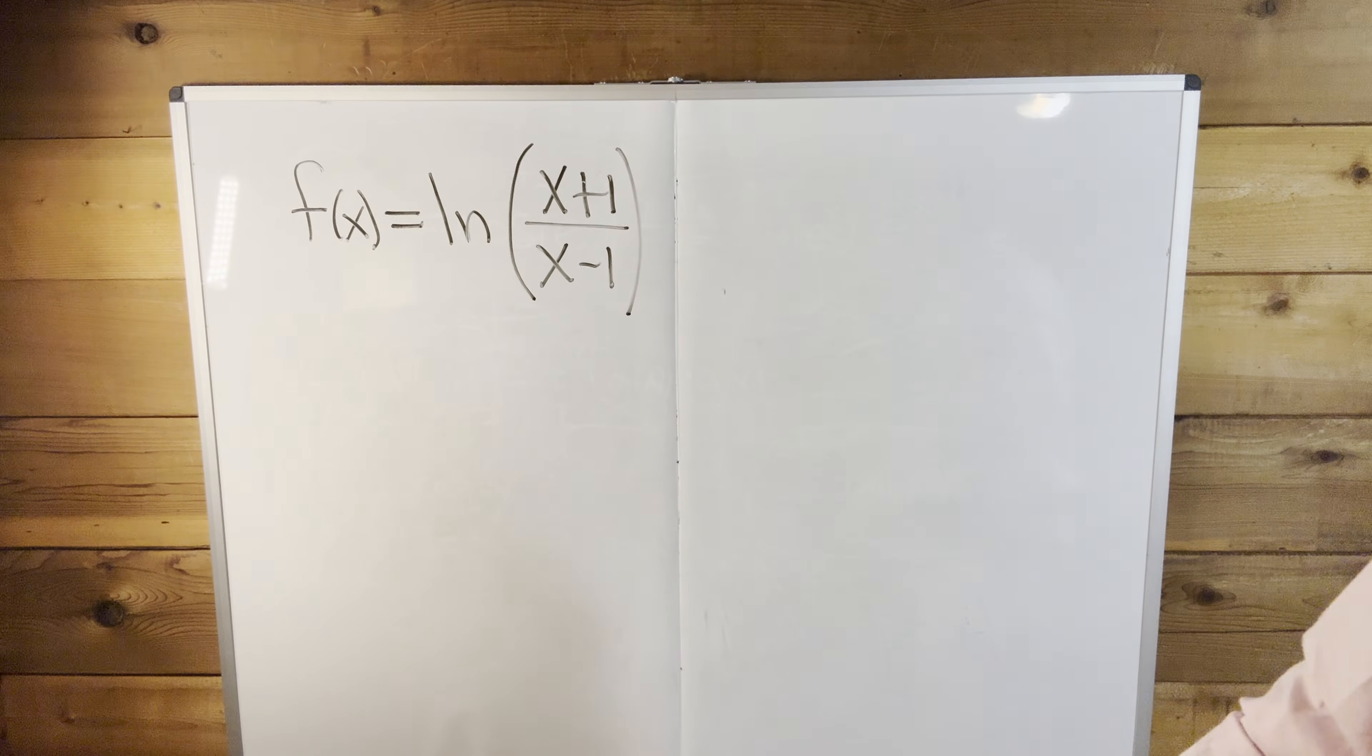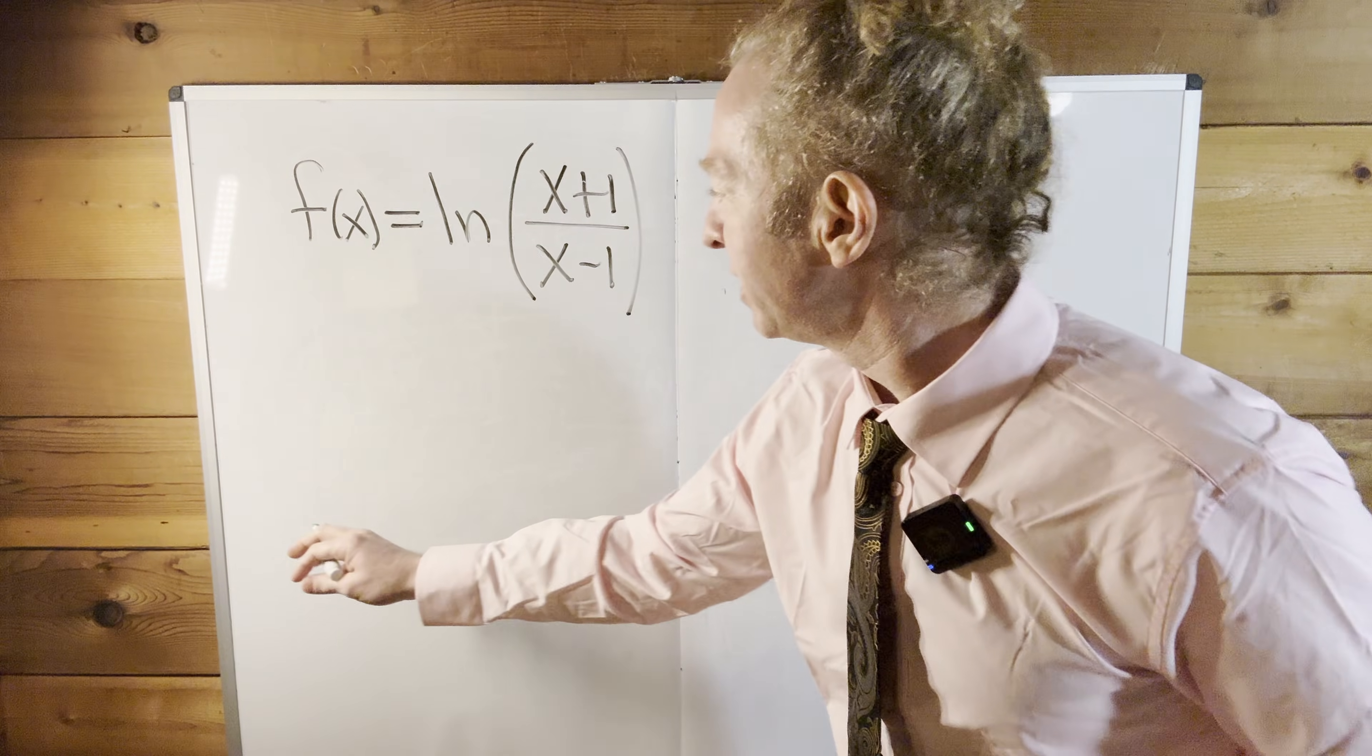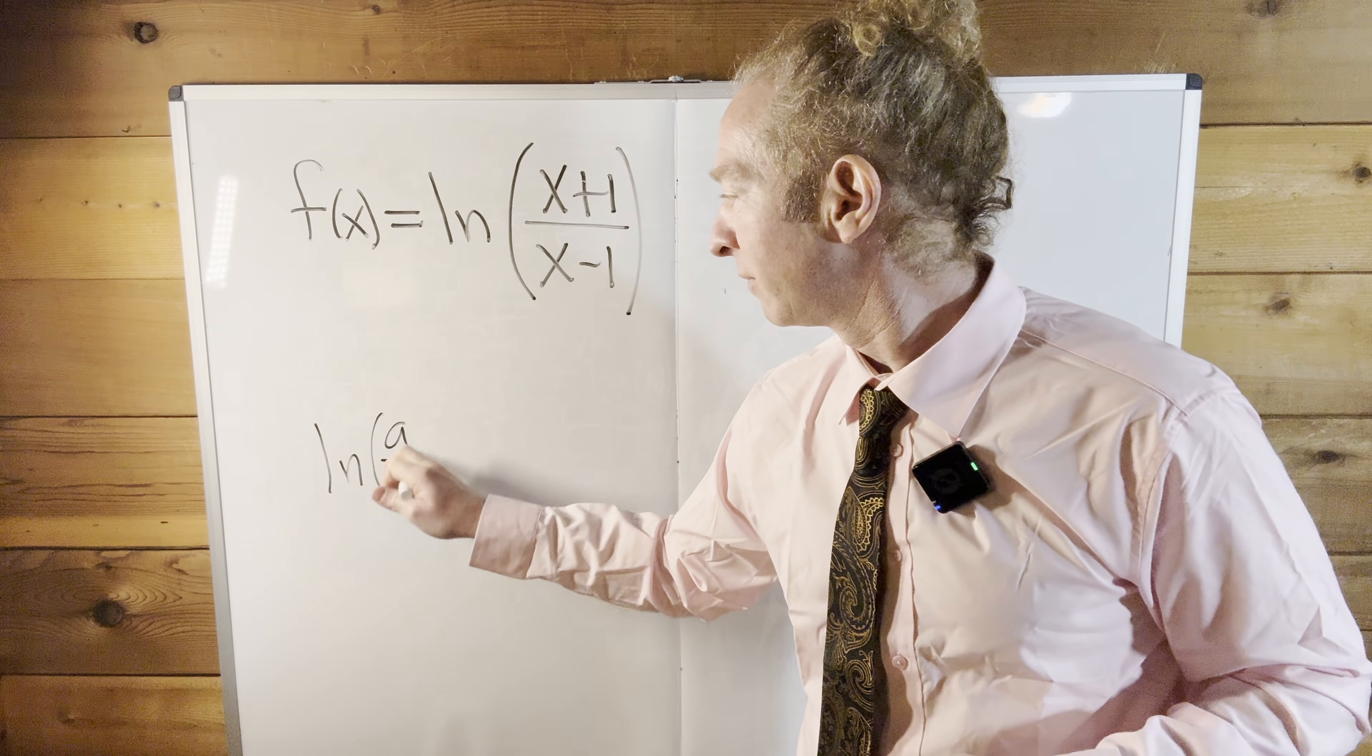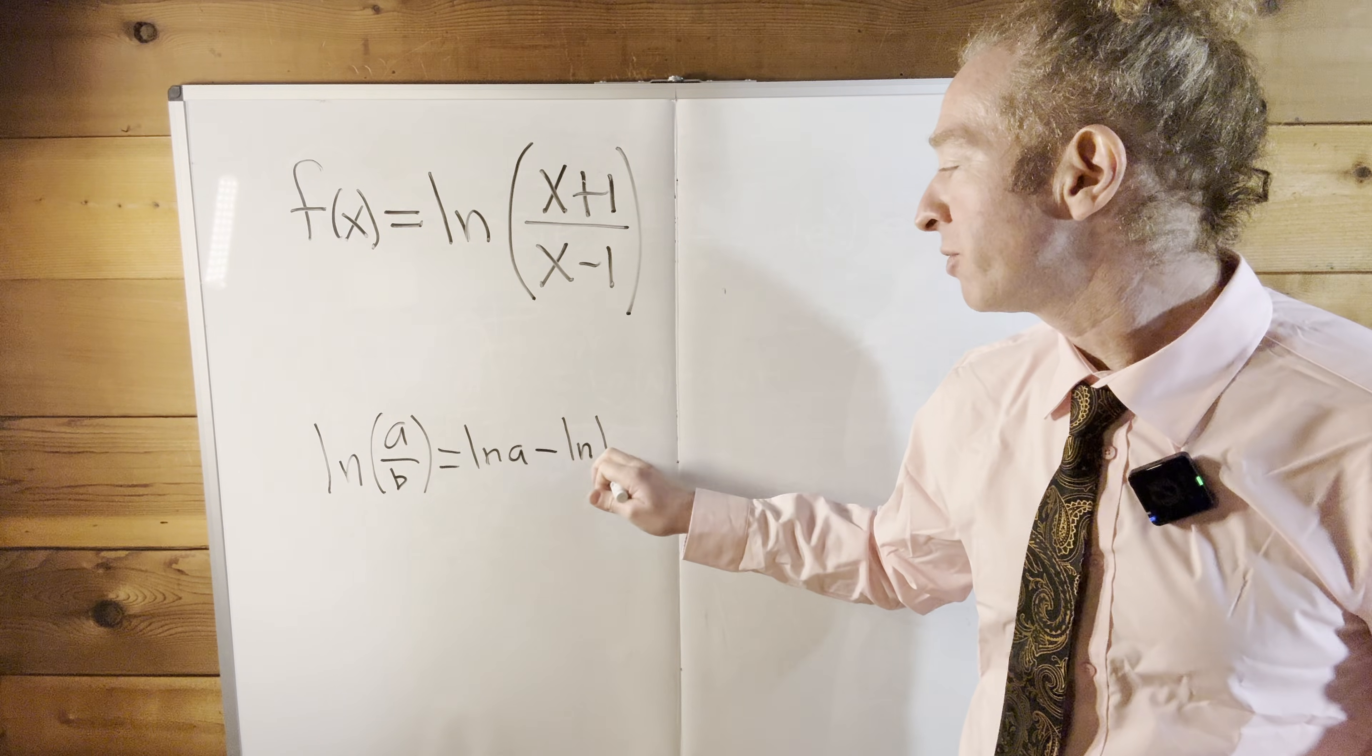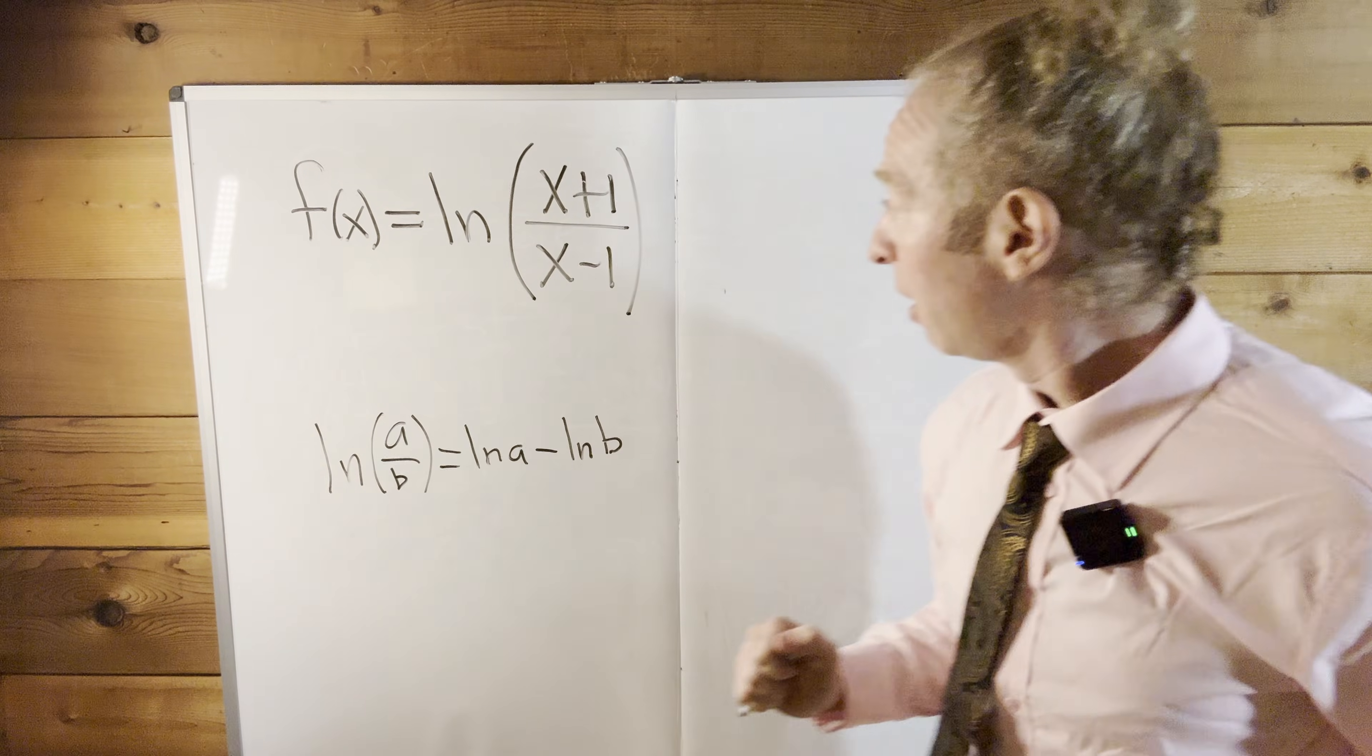So I'm going to go ahead and write that down first and then we'll work through it. So if you have the natural log of a over b, where a and b are positive numbers, this is equal to the natural log of a minus the natural log of b. And if you're wondering why they have to be positive, it's because the domain of the logarithm is just positive numbers.